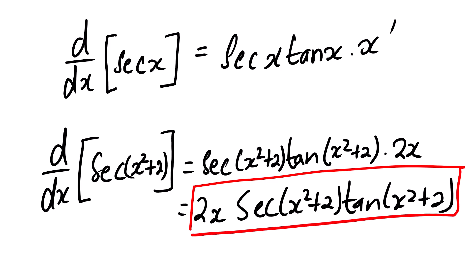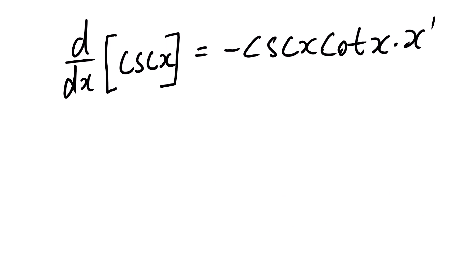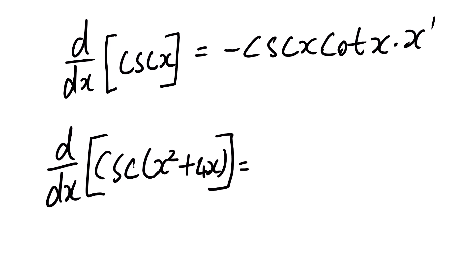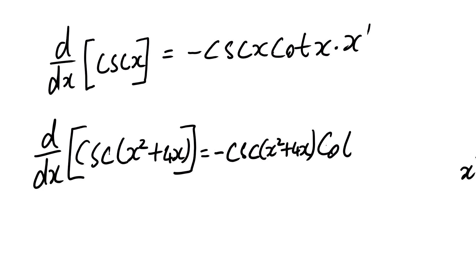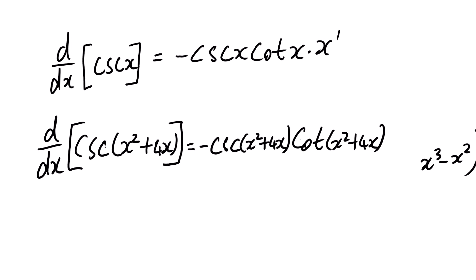The derivative of cosecant x equals negative cosecant x times cot x multiplied by the derivative of x. For example, the derivative of csc(x² + 4x): we get negative csc(x² + 4x) cot(x² + 4x) multiplied by the derivative of x² + 4x, which is 2x + 4.